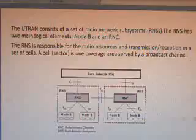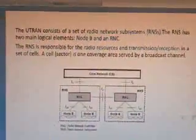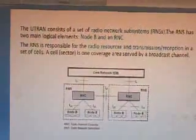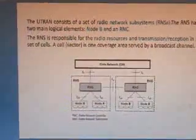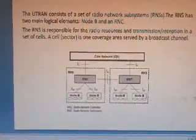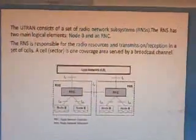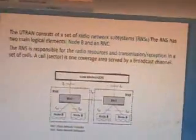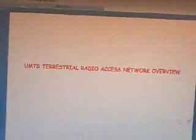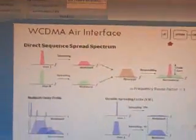Next comes UTRAN — the Radio Network Subsystems (RNS). The RNS has two main logical elements: Node B and RNC. RNC stands for Radio Network Controller. The RNS is responsible for radio resources and transmission and reception in a set of cells. A cell sector is one coverage area served by a dedicated broadcast channel.